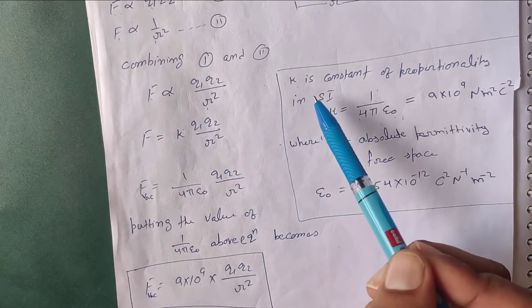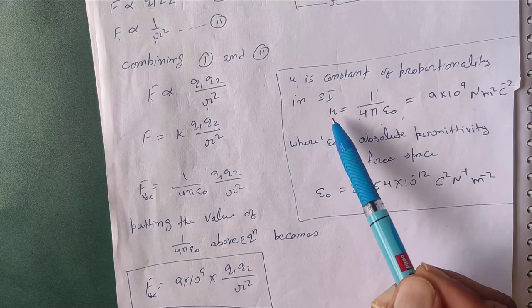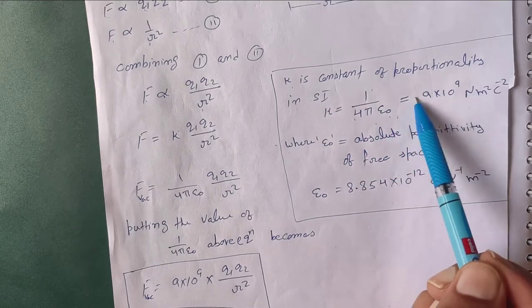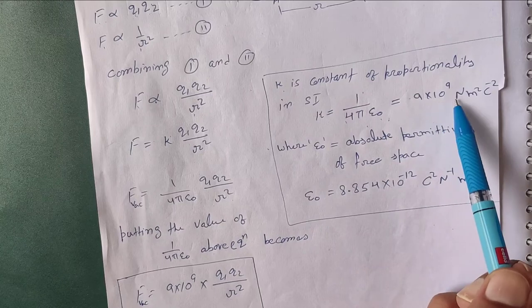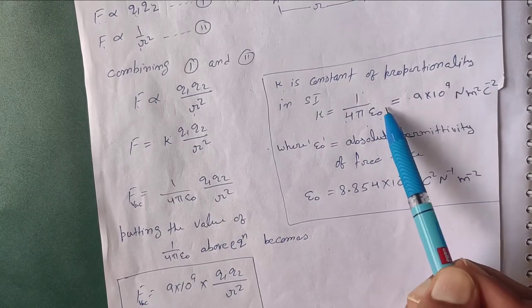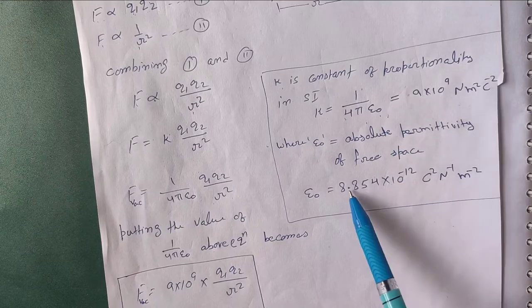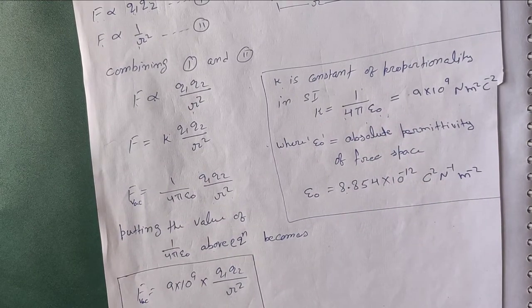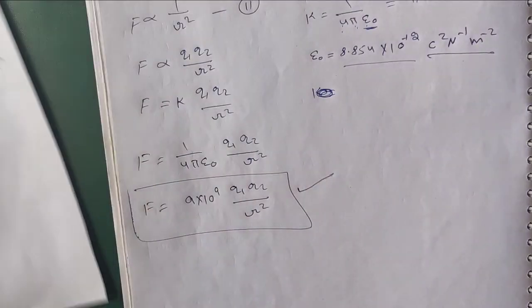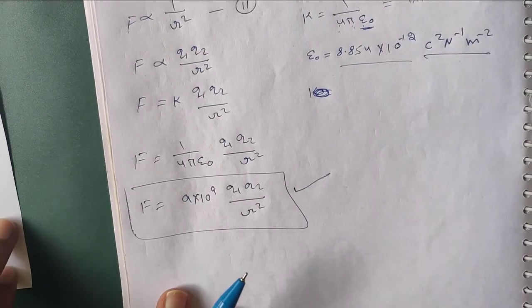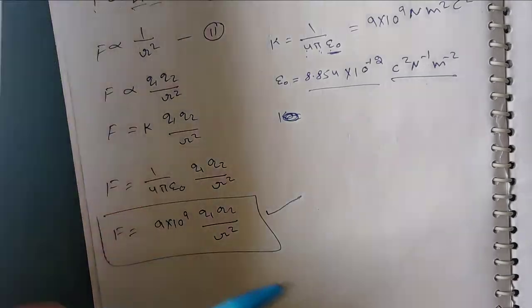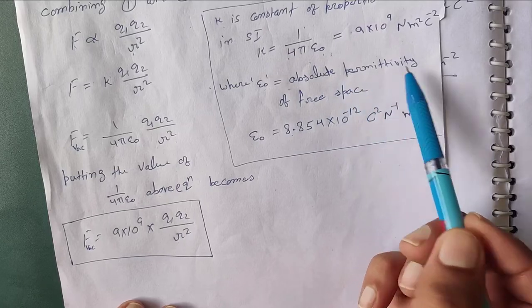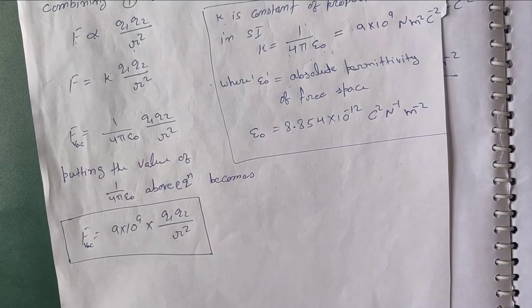K in this expression is the constant of proportionality. K = 1/(4πε₀), whose value is 9 × 10⁹. We get this value by substituting ε₀ = 8.854 × 10⁻¹² Coulomb square per Newton per meter square. ε₀ is called absolute permittivity.